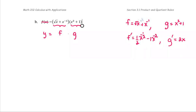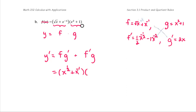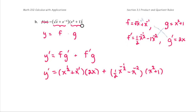Now we have all the prep work done. Our goal is to find y prime. Y prime using the product rule is going to be the product of f and g prime, added by the product of f prime and g. Then replace f with the quantity square root x, or written as x to the power one half plus x to the negative first, and multiply by g prime which is 2x, plus f prime which is one half x to the negative one half minus x to the power negative second, multiplied by g which is x squared plus one.